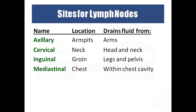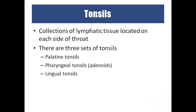The sites where lymphatic nodes are most concentrated are: axillary (armpit), cervical (neck region), inguinal (groin), and mediastinal (chest region). Tonsils are lymphatic tissue located near the pharyngeal region. We have three sets of tonsils: if present near the palate, we call them palatine tonsils; if near the pharyngeal region, pharyngeal tonsils; if above the tongue region, lingual tonsils.